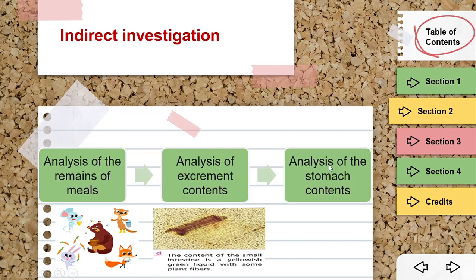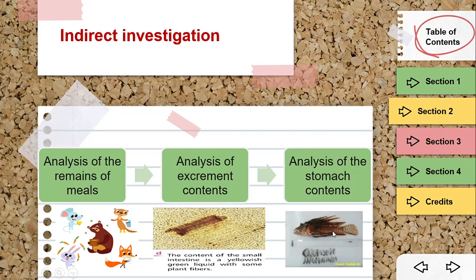Another method is the analysis of stomach contents. For example, with a fish, after the death of the animal, the scientist will open the stomach and examine its contents to see what is inside. From the contents of the stomach, the scientist will decide whether the animal is phytophagous, omnivorous, or zoophagous. So indirect investigation involves the analysis of meal remains, excrement contents, or stomach contents.